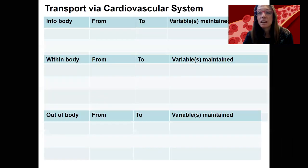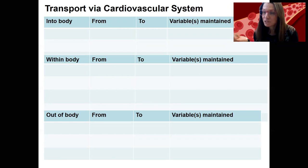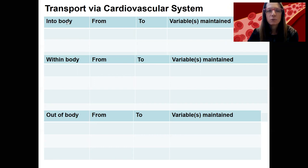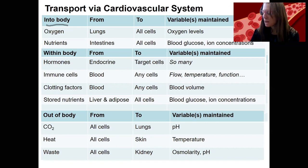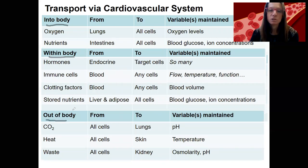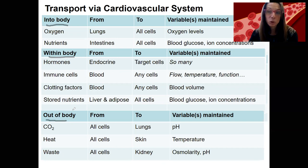I'm going to go over this in a table. This is one way to break down transport in the cardiovascular system — a table that makes sense for organizing transport into things that go into the body from outside, things that are transported within the body, and things that are going out of the body. Each of these has where that thing is going from and to.